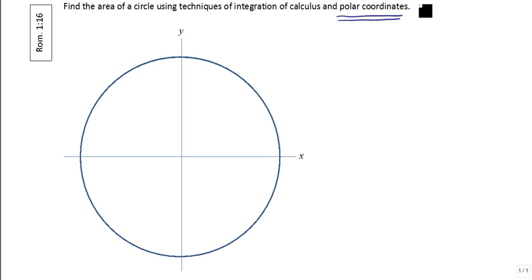Polar coordinates, as you may recall, are described by the ordered pair r and theta. In Cartesian coordinates, of course, we had x, y.